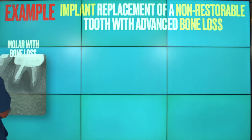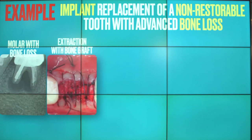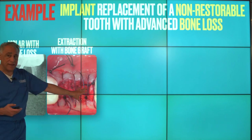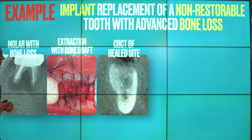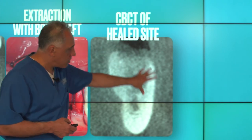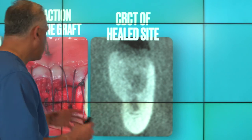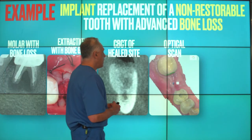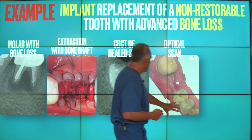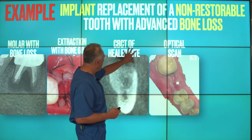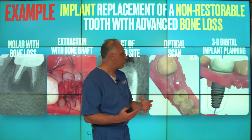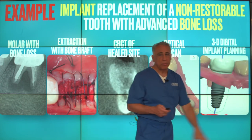Here's an example of a patient who had a molar with an extensive amount of bone loss from infection. The tooth was extracted and in this case was grafted at the same time. About six months later, after the site healed, we took a cone beam CT scan, which demonstrates the restoration of the defect with an adequate amount of height and width of bone. Next, we take a digital impression of the patient's teeth, which is combined with the cone beam CT scan data in software to begin three-dimensional implant planning.